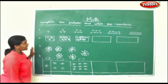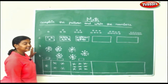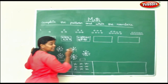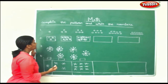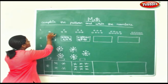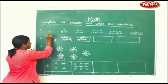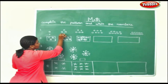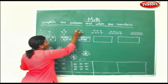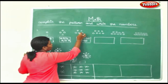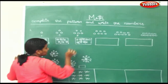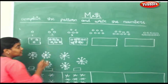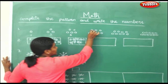Now let us complete the pattern and write the numbers. There are a set of numbers given. We will see which pattern they have taken with the numbers and shapes. Here 1, then 1, 2, 3, then 1, 2, 3, 4, 5. So what must be next? They have taken odd numbers: 1, 3, 5. So next must be 7. Let us count and see.